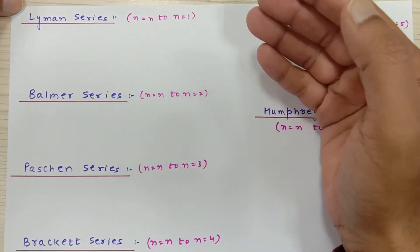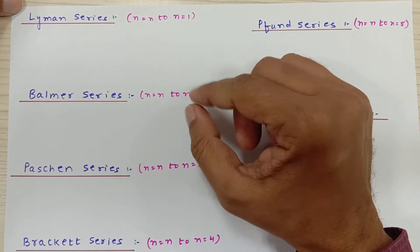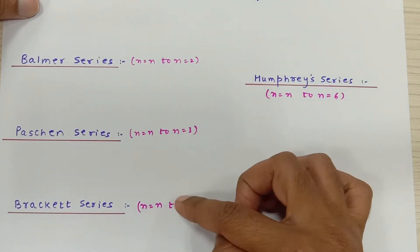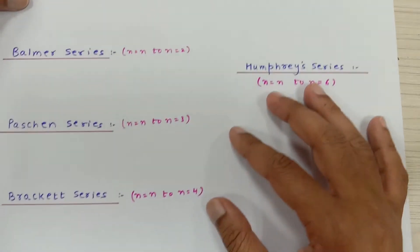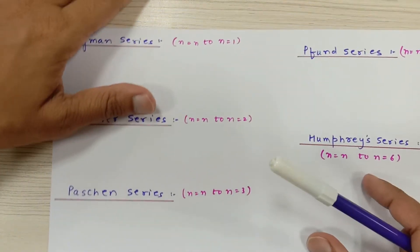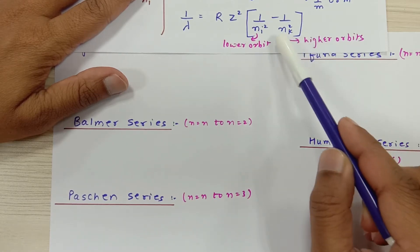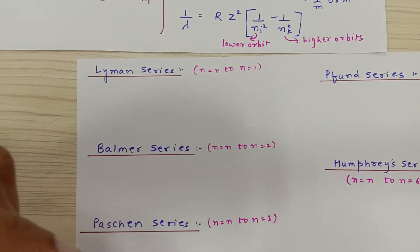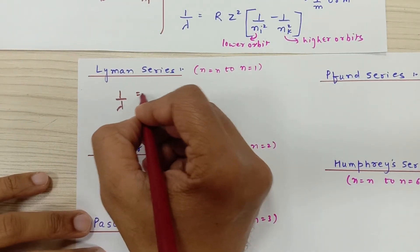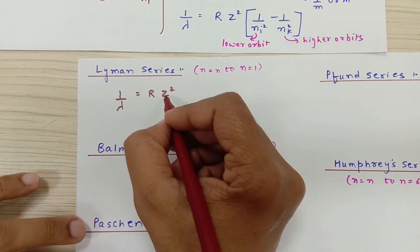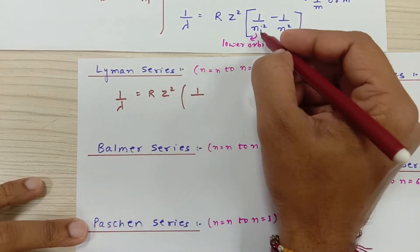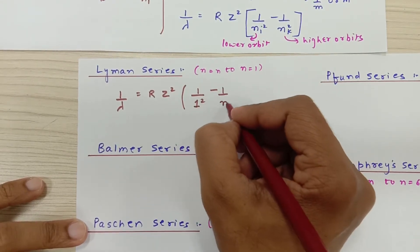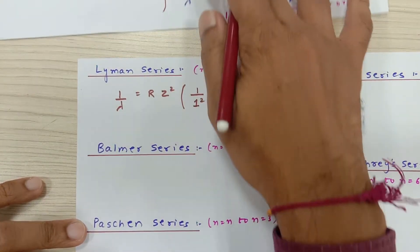If electrons from higher orbits jump down to the second orbit, the photons emitted have wavelengths in the visible range, and they are classified under the Balmer series. The Paschen, Brackett, Pfund, and Humphrey series are in the infrared and far infrared region. So for the Lyman series: 1 upon lambda equals R times Z² times (1/1² minus 1/N²), where N can be 2, 3, 4, 5, 6, or any larger integer.